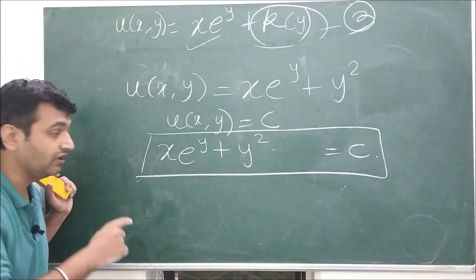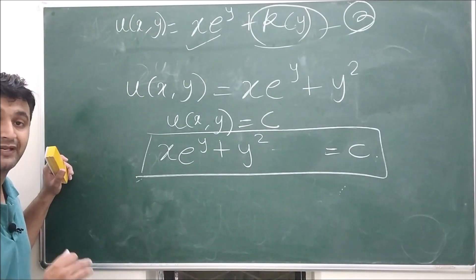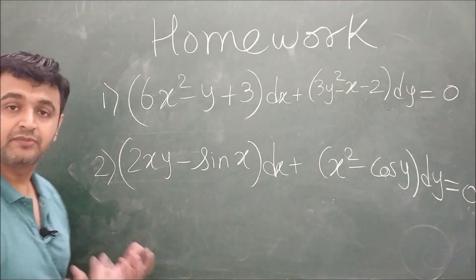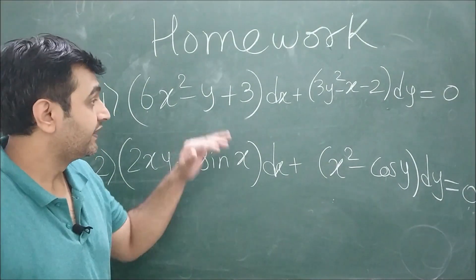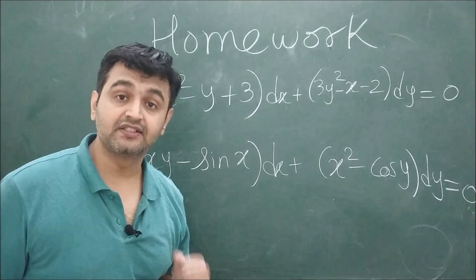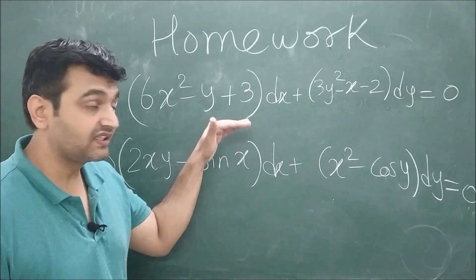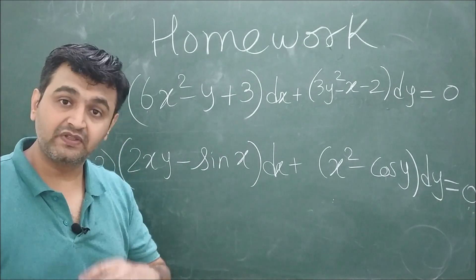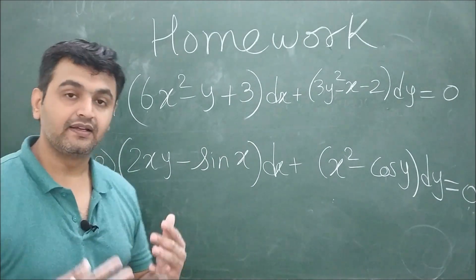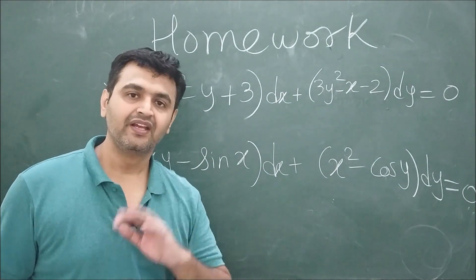So xe^y + y² = c is the solution to the given differential equation — the same result I gave you at the start. This is the algorithm: write down the two equations for ∂u/∂x and ∂u/∂y, integrate the first equation, differentiate the result with respect to y, equate with equation 2, find k(y), and get u. Here are two practice examples to solve using exactness — first check whether they are exact using ∂M/∂y = ∂N/∂x, then find u using the algorithm, and comment your answers. Thank you and have a nice day!